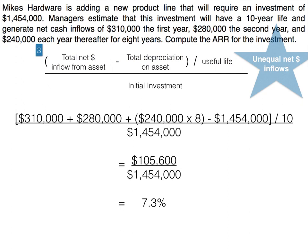Under the original accounting rate of return method, we need Form 3 because of the unequal cash flows. Add up all the cash flows to get the total net cash inflow, then subtract total depreciation — in this case the full cost of $1,454,000 since there's no residual value. Divide that result by the useful life of 10 years to get the numerator, then divide by the initial investment.